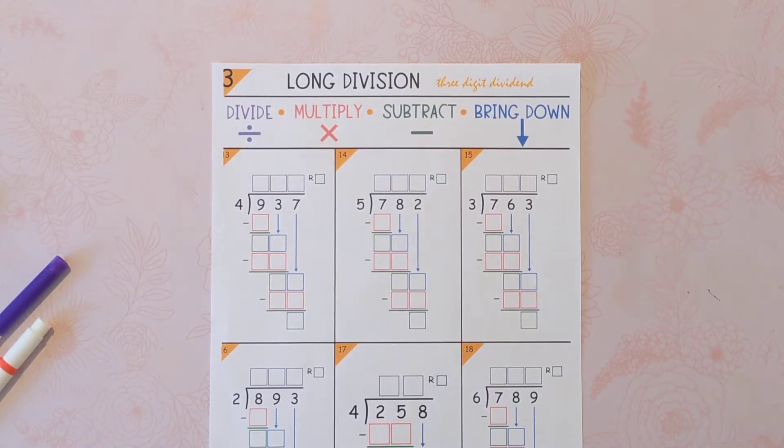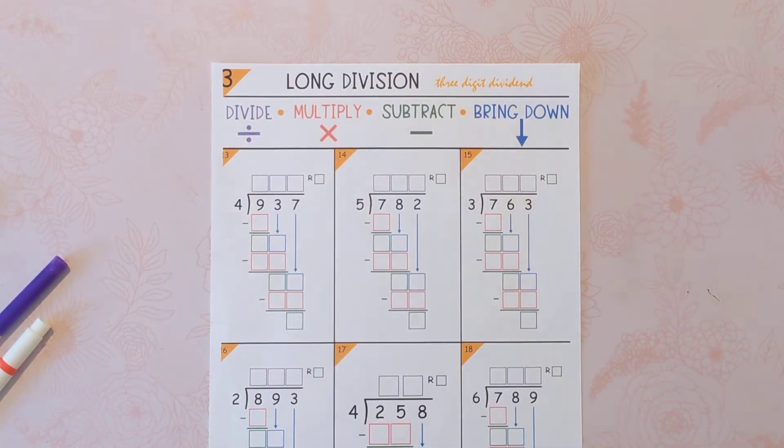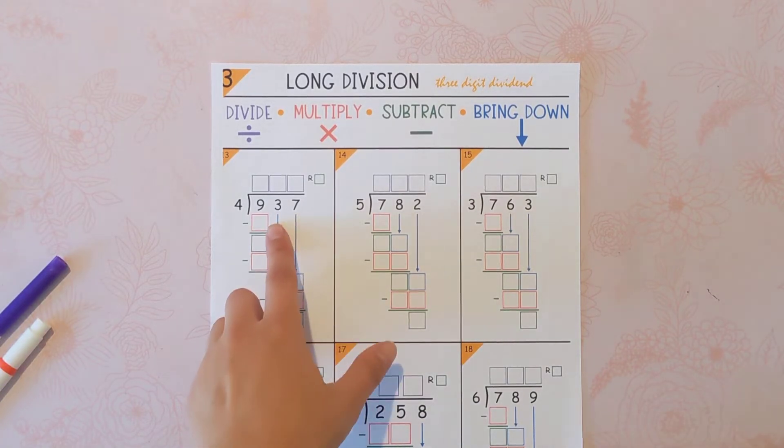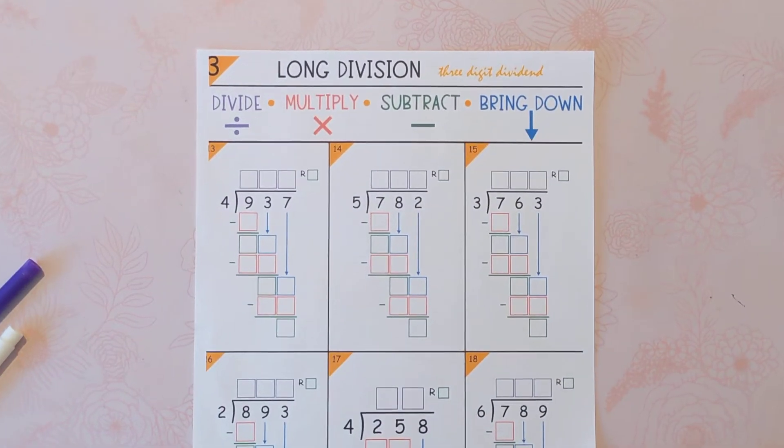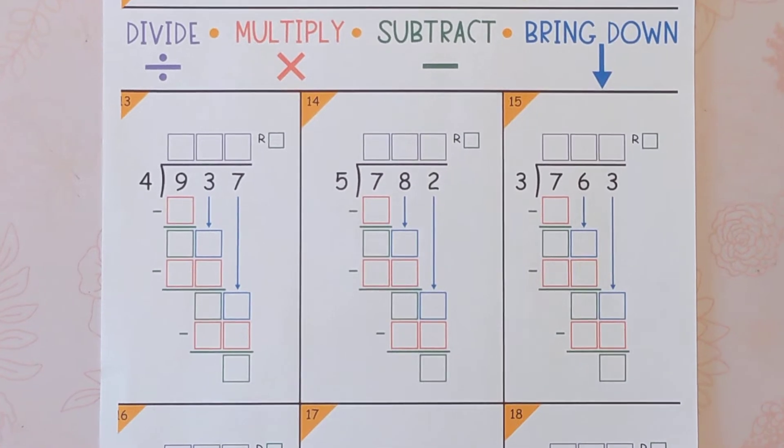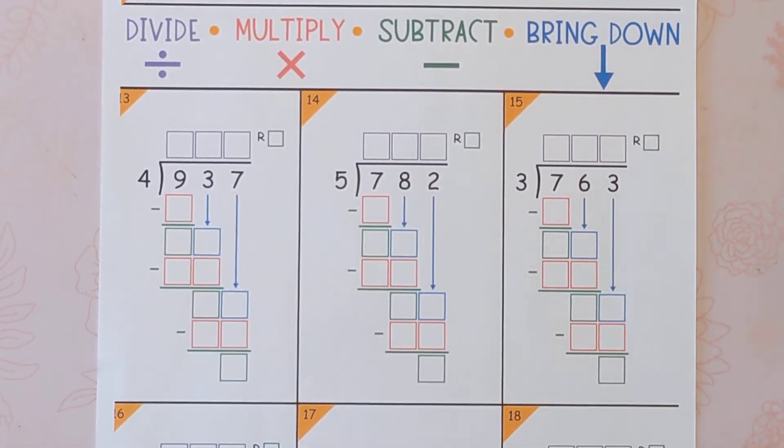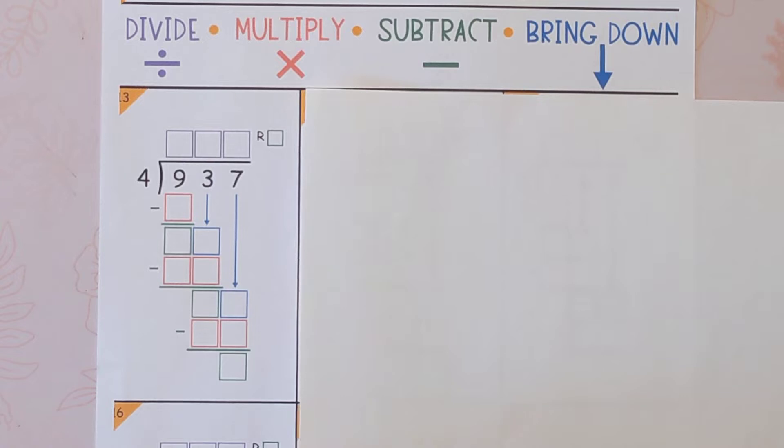Hi everybody, we're going to practice long division using the standard algorithm. We're going to do 937 divided by 4, so you can grab a piece of paper and follow along with me, or you can use these worksheets or whiteboard, and we're going to go ahead and get started.